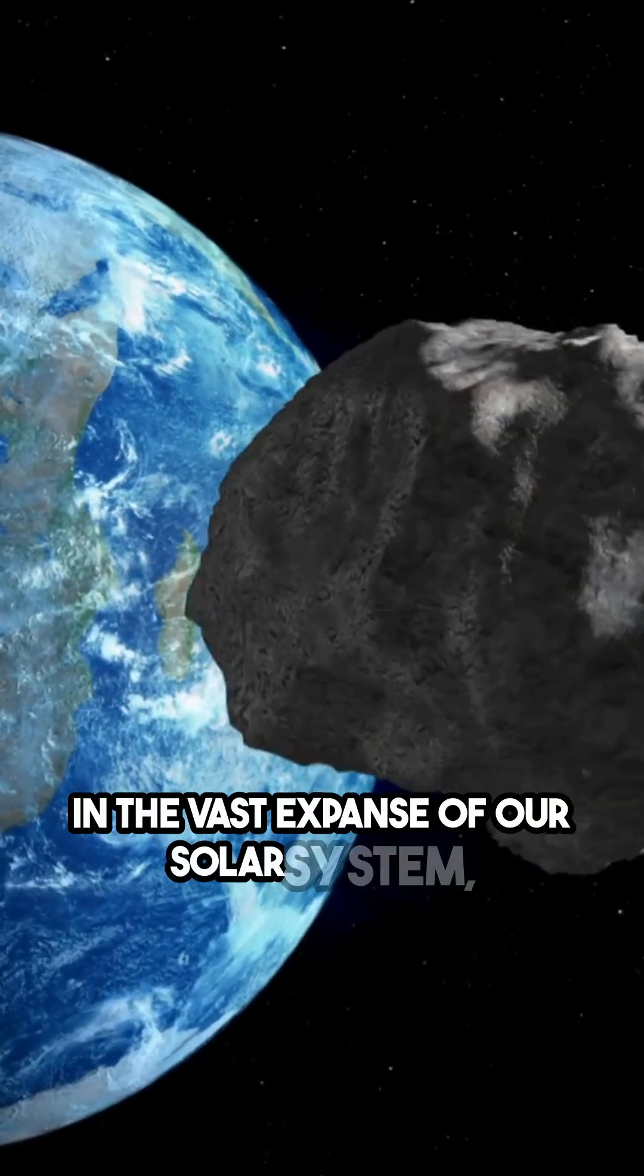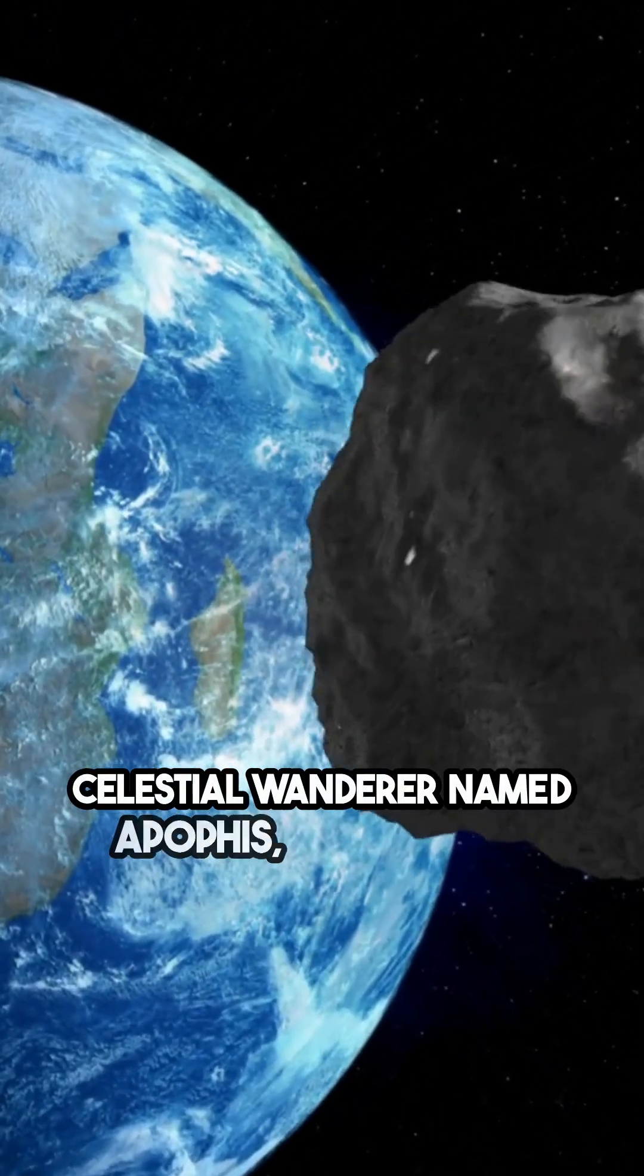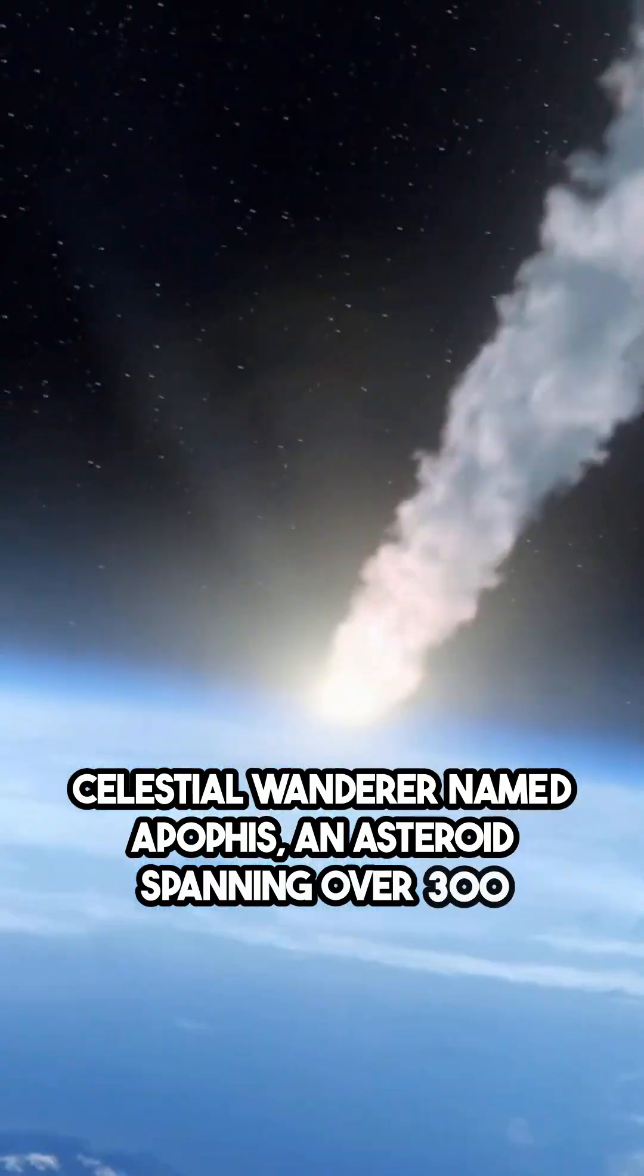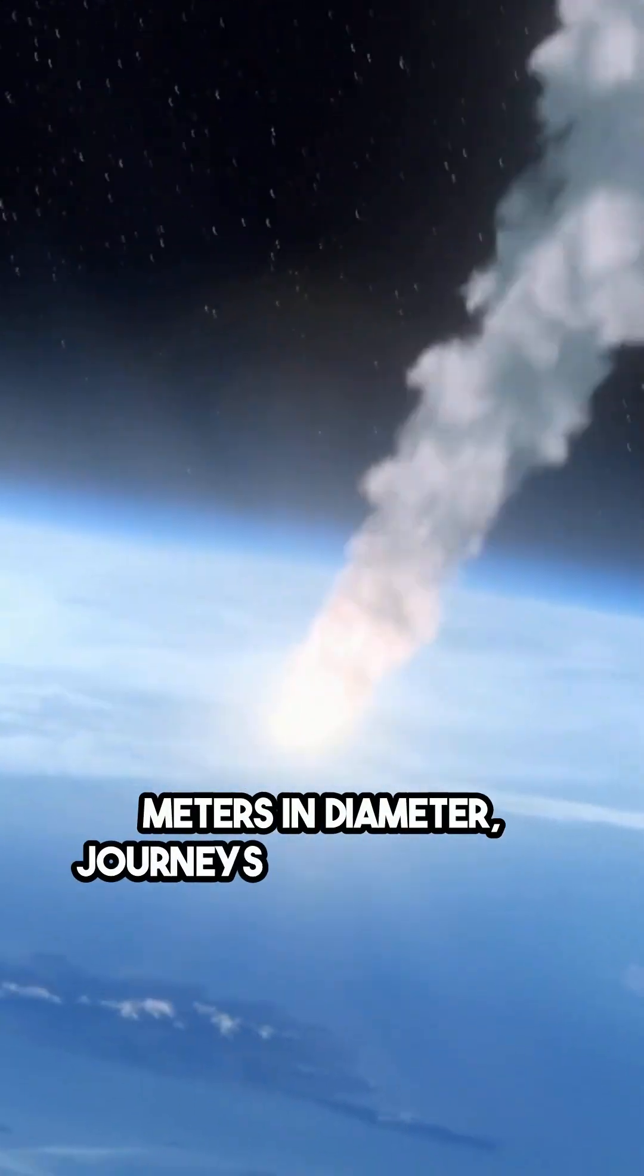In a vast expanse of our solar system, a celestial wanderer named Apophis, an asteroid spanning over 300 meters in diameter, journeys close to Earth.